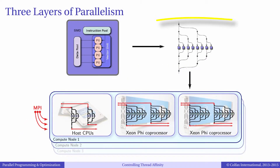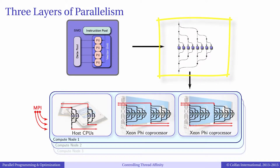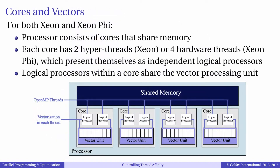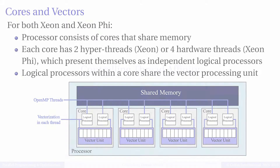OpenMP threads are streams of instructions — in other words, programs — that run concurrently and share the virtual memory space of their common process. The reason why multi-threading with OpenMP improves performance is that different threads are scheduled on different cores, and this utilizes the multi-core parallelism in Intel platforms.